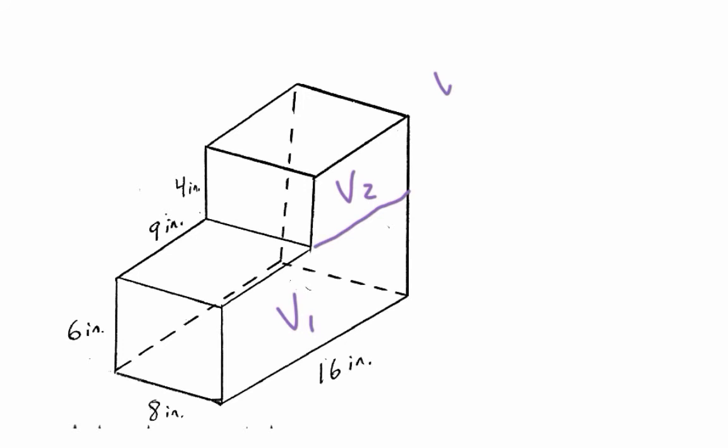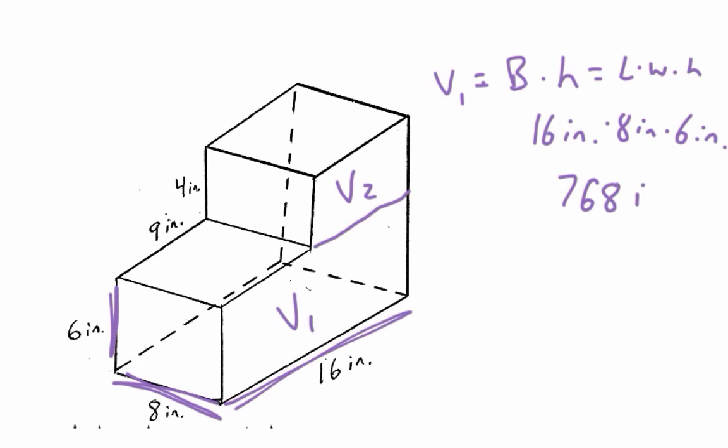So now for here, you could say volume one is going to be the area of the base times the height. Or because that's a rectangle, rectangular prism, you could just do length times width times height. And then from there, my length, I'm going to say this is my length, my 16. So I have 16 inches. I'm going to totally run out of space trying to do it there. So I have 16 inches. And my width now is going to be my 8 inches there. So times 8 inches times my height of 6 inches. Plug those in, I come up with 768 cubic inches. So that right there is going to be my first volume.